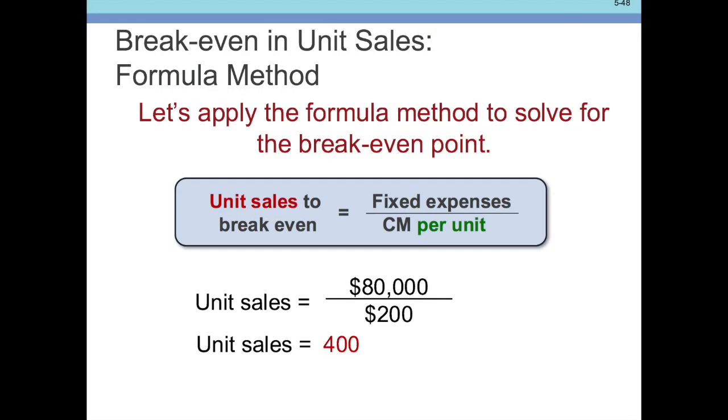You get 400 bikes as your break-even point. The other way to do this is in terms of unit sales using the contribution margin ratio — just take fixed expenses divided by contribution margin per unit. You have $80,000 in fixed expenses divided by $200 per unit. If units times contribution margin equals fixed expenses and equals zero, they balance. Simply divide by the contribution margin to find how many units you need to cover your break-even point.